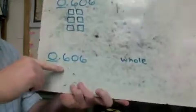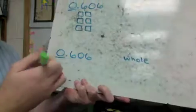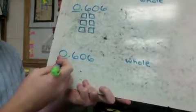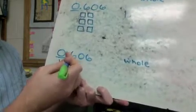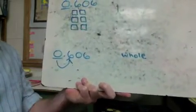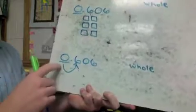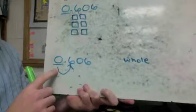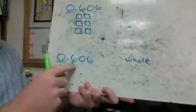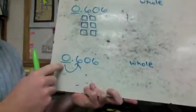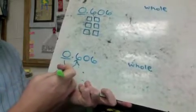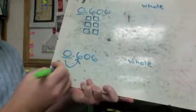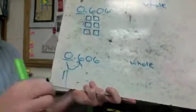Using the rule method: I've underlined the whole number place and I look over at the tenths. My rule is 5 or above — round the underlined place up; 4 or below — keep it the same. My number is 6, which means I need to round this up. That becomes 1, and then everything after it I just drop off. My final answer is just 1 whole.